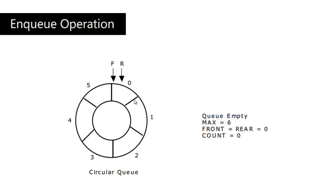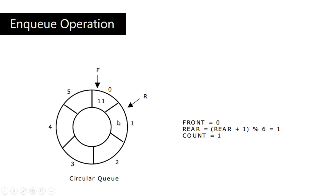Let us do the enqueue operation on the circular Queue. This is the basic circular Queue, currently empty, with 6 locations: 0, 1, 2, 3, 4, 5. Both the front and rear pointers are pointing to the same location which is 0. So front equals 0, rear equals 0, and max is 6 — the maximum number of elements we can store. We take a variable count as 0, which will increment after every enqueue. If we enqueue 11 into the first location, the rear points to the next location. Now count is 1 and rear is incremented to 1.